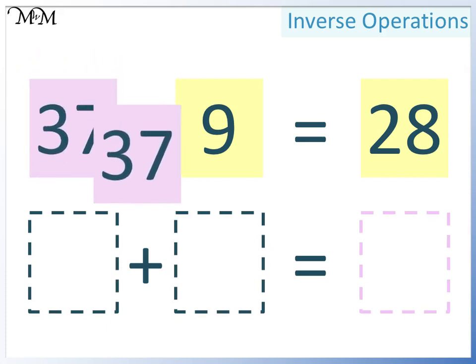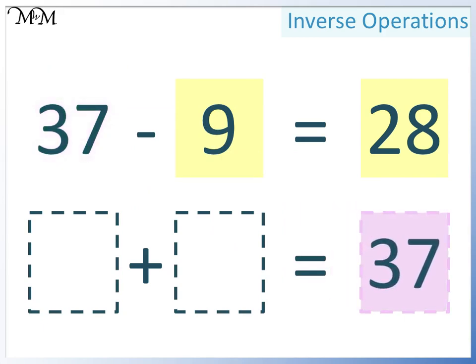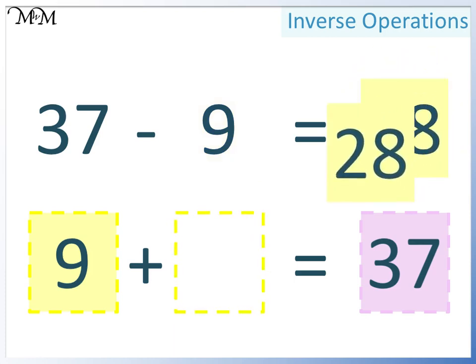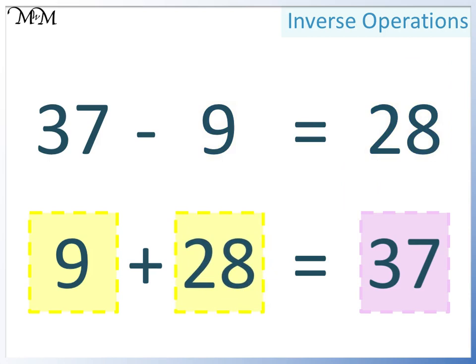So we write 37 here. In the first space we can have either of the two smaller numbers. This time we'll write 9 here, so in this space we'll write 28. 9 adds 28 equals 37. And we know that this is correct because we are using the same numbers that are in the subtraction, and so the two smaller numbers add to make the larger number.